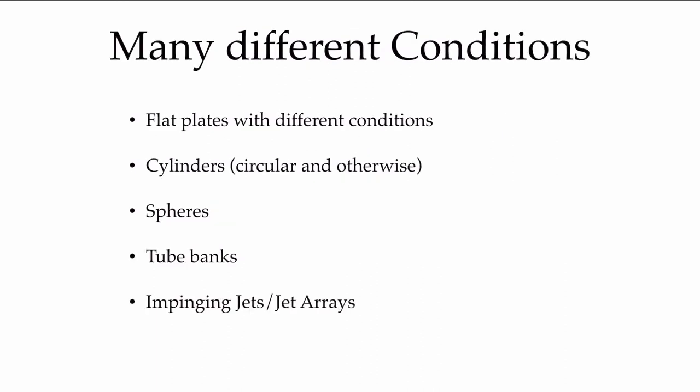We may use many different correlations in our heat transfer problems. Perhaps we have flat plates with different conditions. We may have cylinders that may have circular cross-sections or otherwise. Perhaps we'll be looking at spheres. Tube banks are something that comes up a lot in heat exchangers when you have arrays of pipes that are arranged in certain conditions, perhaps staggered relative to one another. We may have impinging jets that are perhaps impinging on a surface in order to cool a surface. That may be one jet or, again, arrays of jets. All of these things are going to change the fluid mechanics and the interaction of the fluid mechanics and the heat transfer around those surfaces.